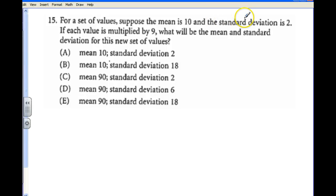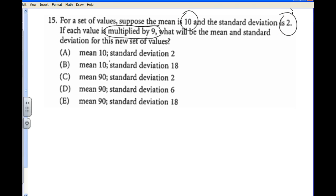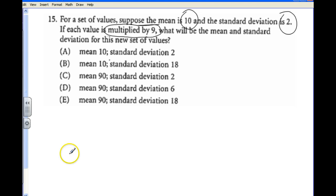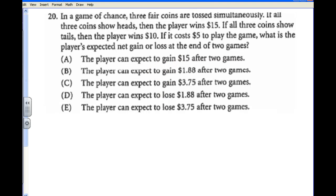For a set of values where the mean is 10 and standard deviation is 2, each value is multiplied by 9. When you multiply every value by 9, both the mean and the standard deviation are multiplied by 9. So the correct answer is E: mean of 90 and standard deviation of 18. When adding, you have to be careful with standard deviations, but multiplication works as you'd expect.